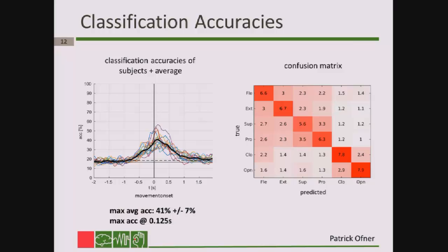I would also like to show the confusion matrix, since it was a multi-class problem. We can see the true class labels and predicted class labels for flexion, extension, supination, pronation, hand closing, and hand opening. Movements involving the same joints are often intermixed with each other. For example, hand opening was often detected as hand closing, or pronation was often detected as supination.